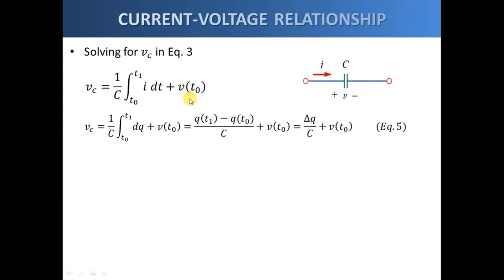Of the capacitor, so initial voltage of the capacitor. Simplifying this, this shows us that the voltage across the capacitor is really the voltage due to the change in the accumulated charge plus any initial voltage.